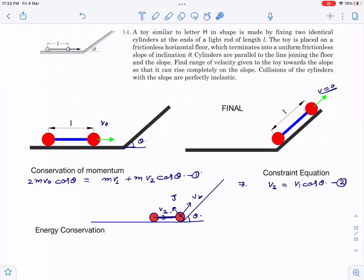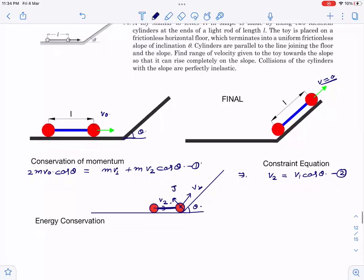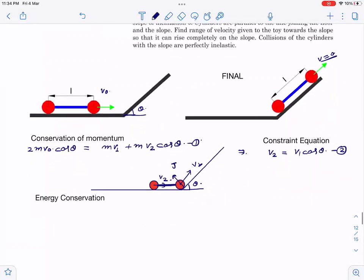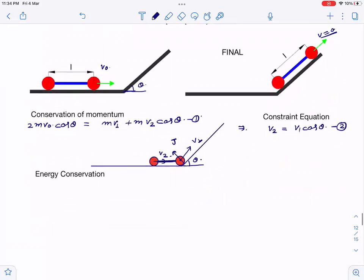We can't do energy conservation from the initial position to the final position because inelastic collision is involved. But just after collision to final position, we can conserve energy. Energy conservation is between this initial state after collision and the final state.